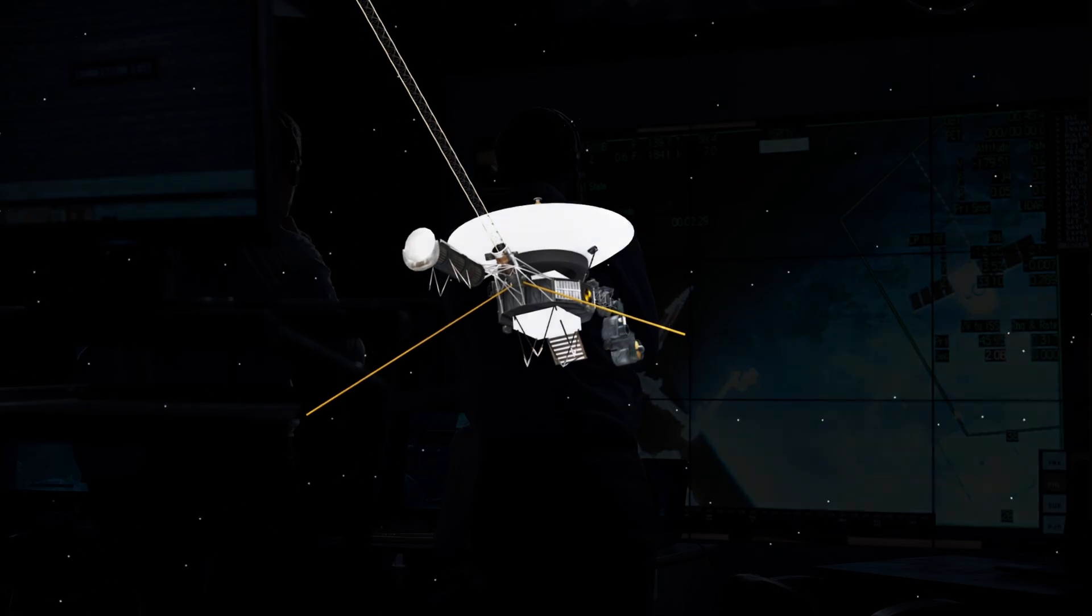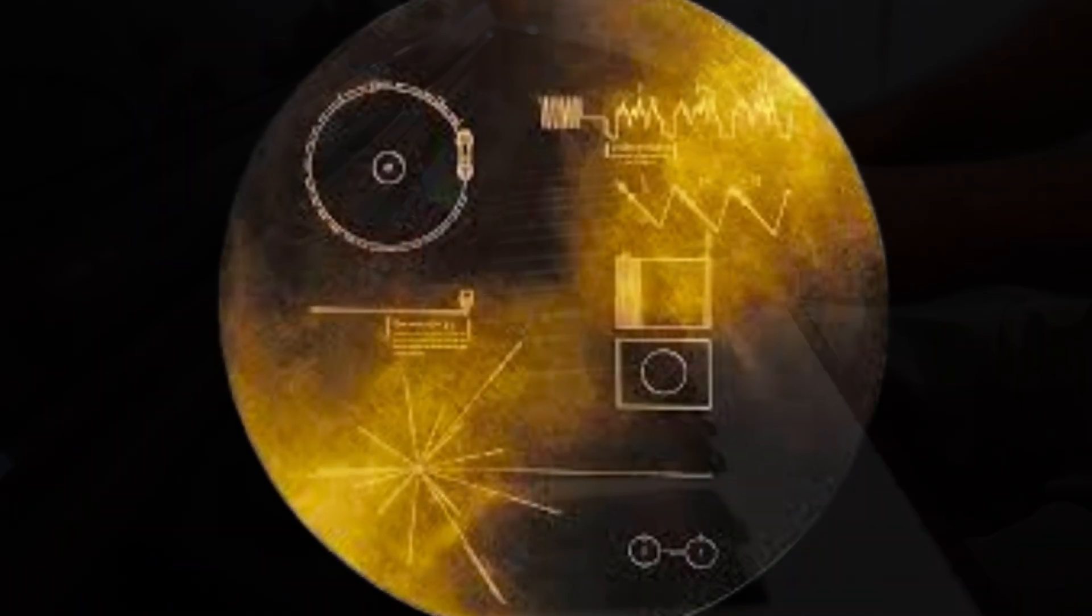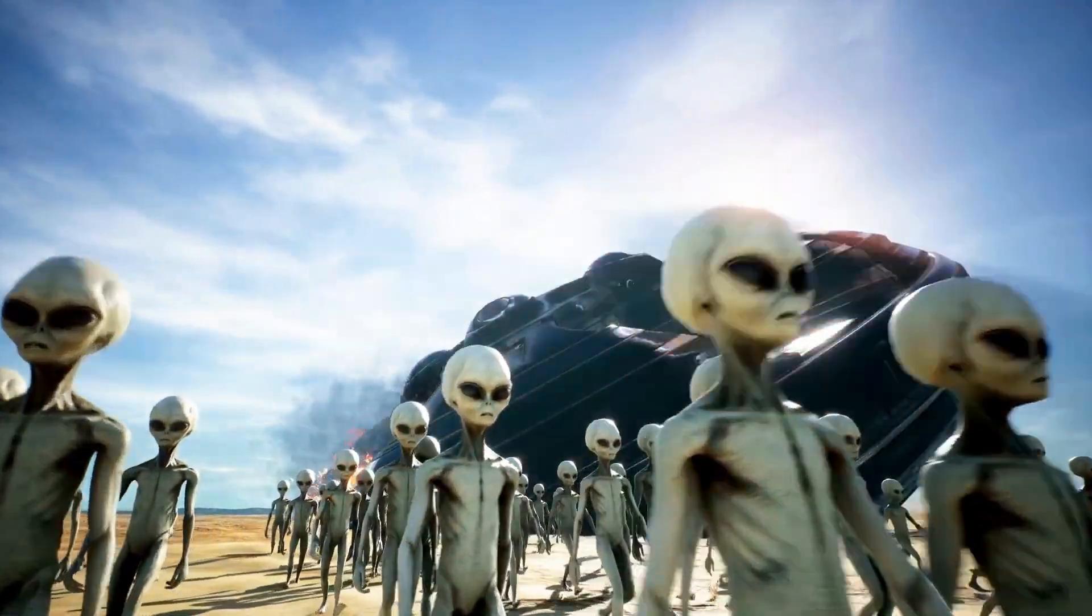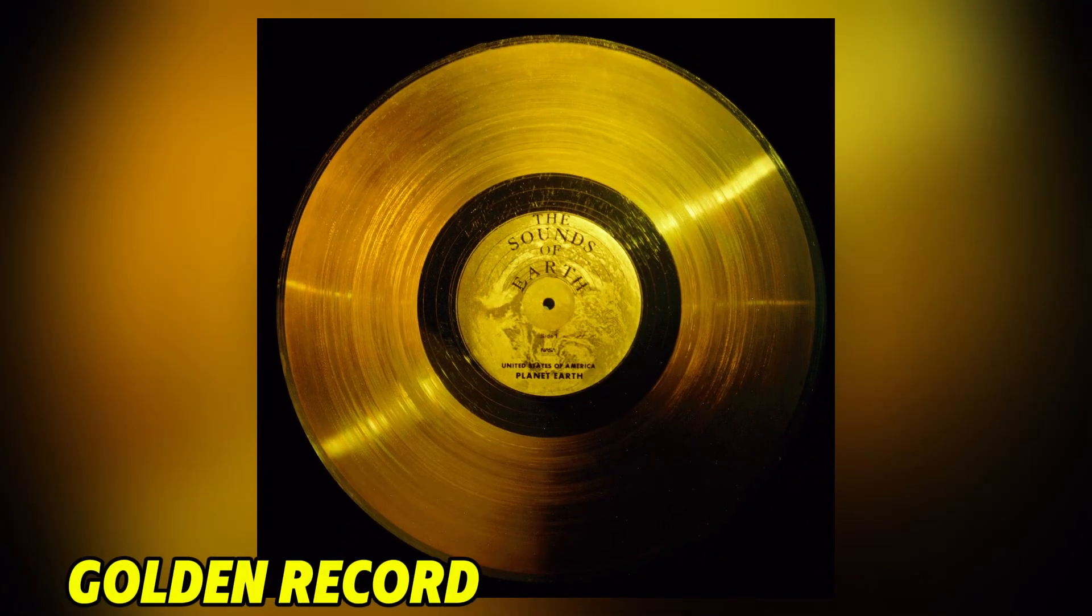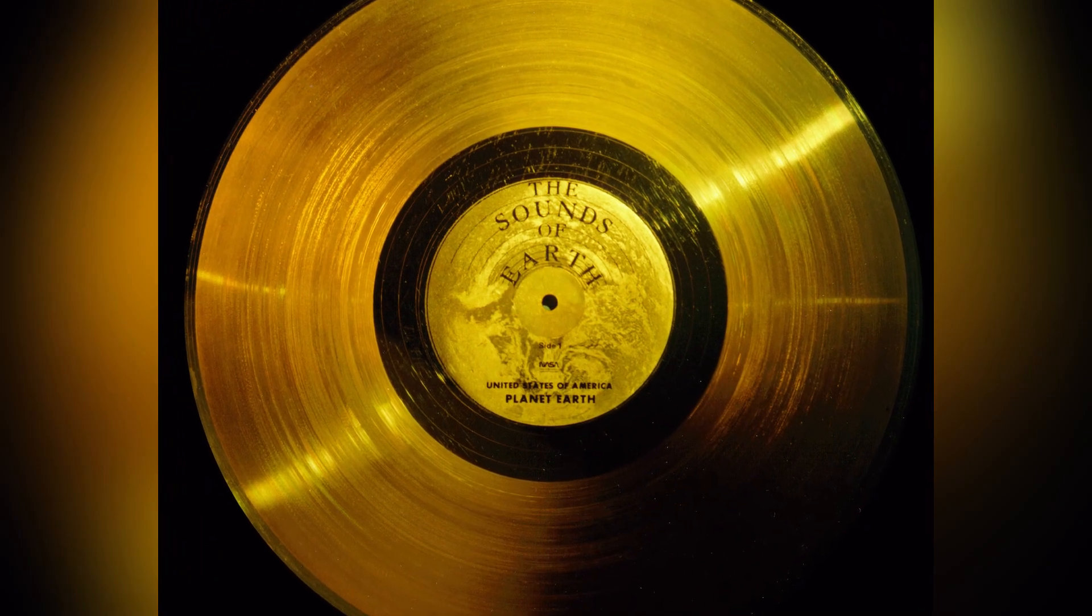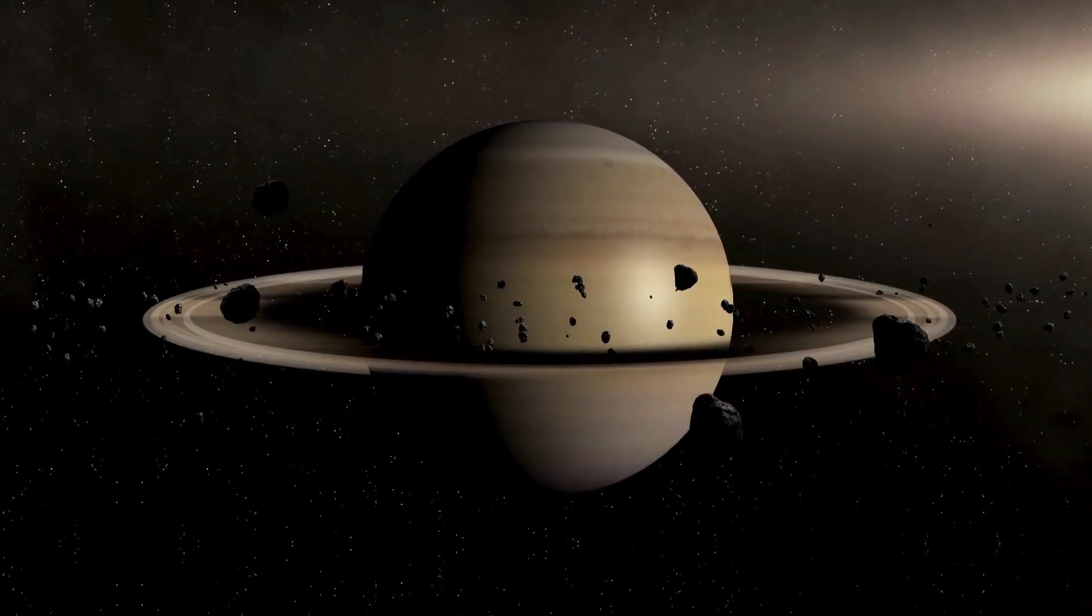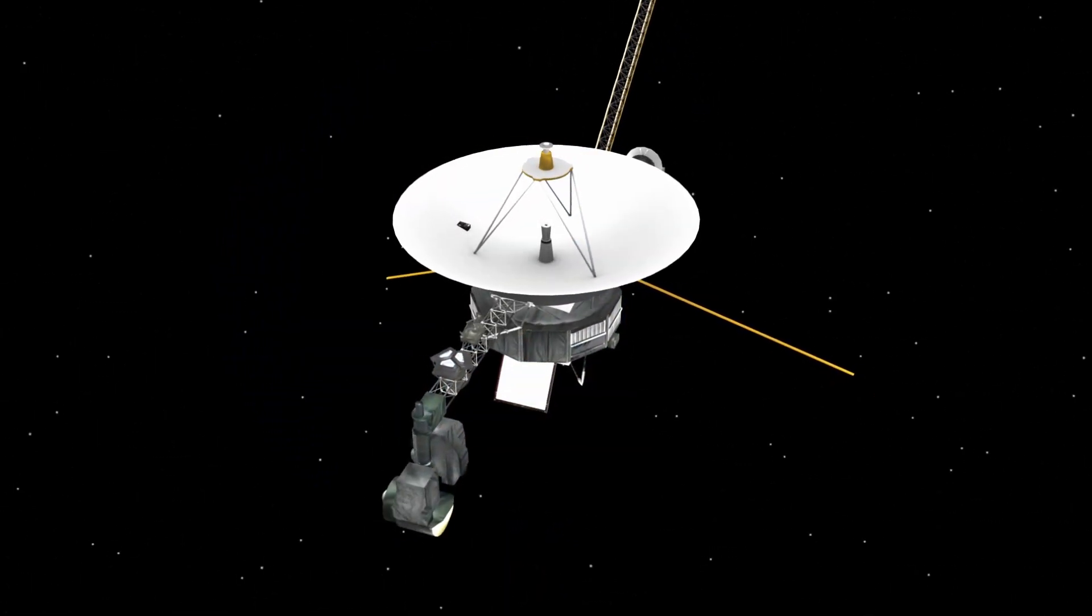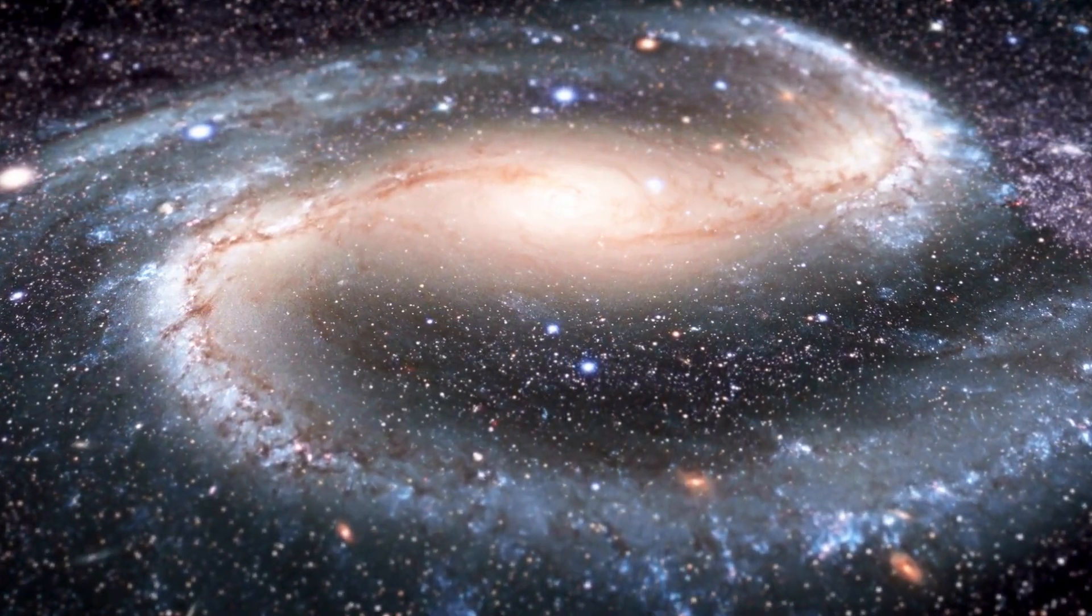While Voyager 2 continues its scientific mission, it also stands as humanity's emissary to the stars. The golden record it carries encapsulates the sounds, music, and essence of life on Earth, a message meant for any intelligent life that might one day encounter it. From the sound of a mother's heartbeat to greetings in 55 languages, the golden record reflects the diversity and hope of humanity. It's a message that transcends borders and time, reminding us of our shared existence on this tiny planet. Voyager 2's journey may eventually come to an end, but its legacy will endure for billions of years, drifting silently through the galaxy as a testament to our curiosity and resilience.